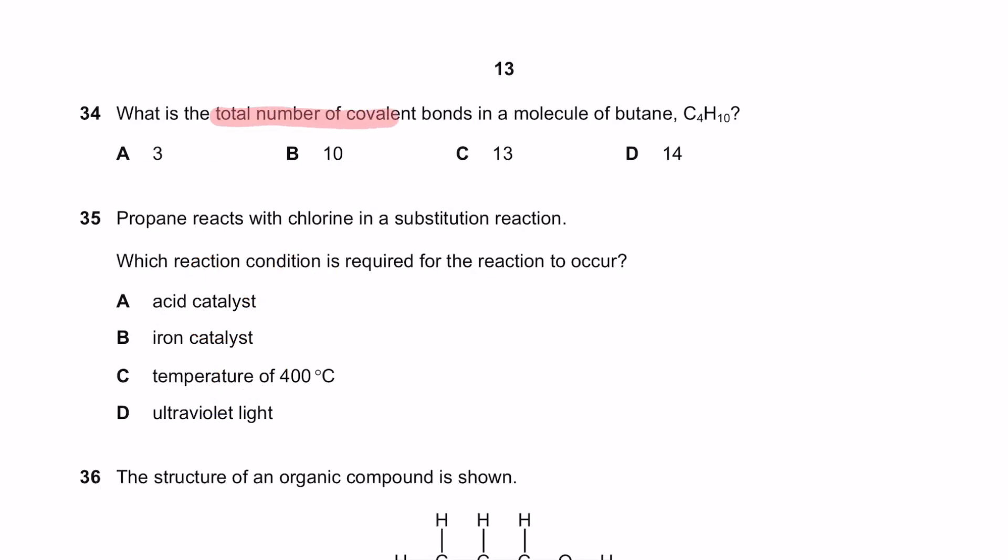What is the total number of covalent bonds in a molecule of butane? Here is the structural formula of C4H10. So the total number of bonds is 1, 2, 3, 4, 5, 6, 7, 8, 9, 10, 11, 12, 13. So the answer is C.